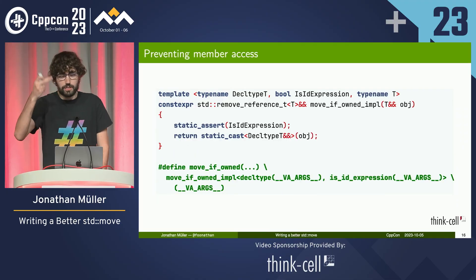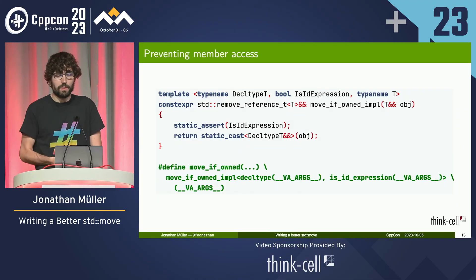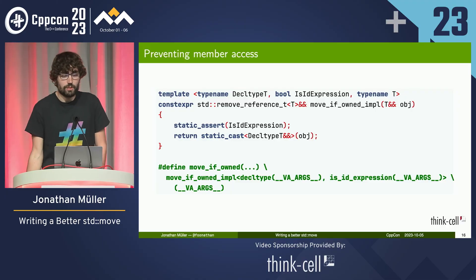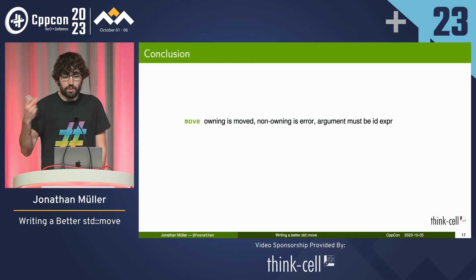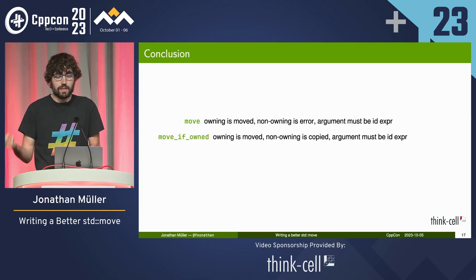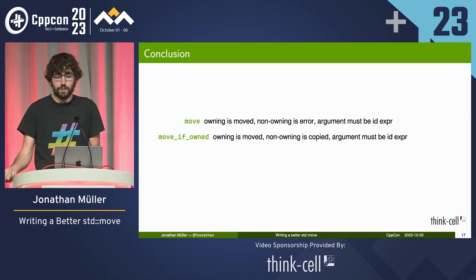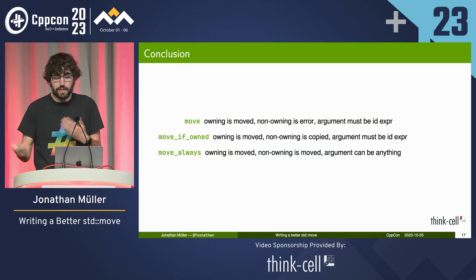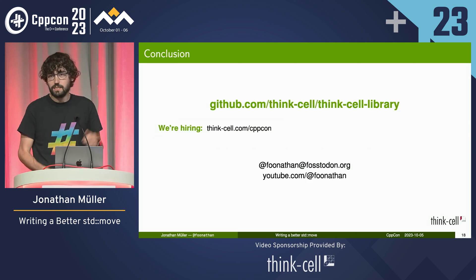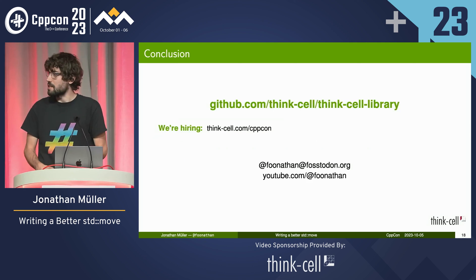We also need to worry about ID expressions — the same thing as before, so we use the reflection trick again. To conclude, we've got three moves: the one that moves owning things but makes non-owning an error, requiring an ID expression argument; the conditional one that copies if not owning; and move_always that always moves unconditionally. It's available at the thingslib library and we're also hiring.